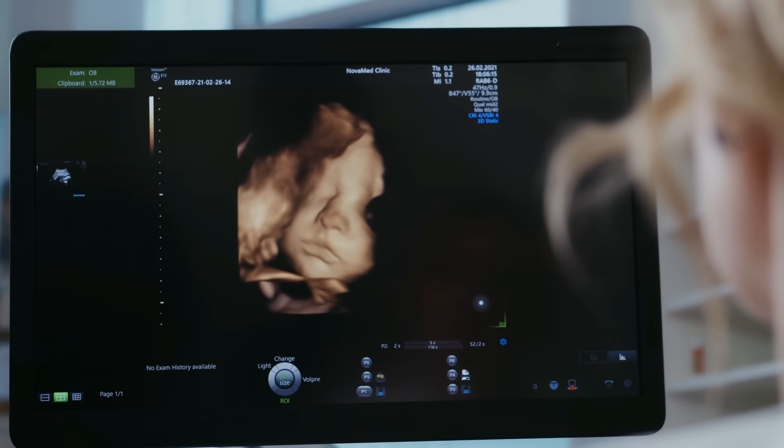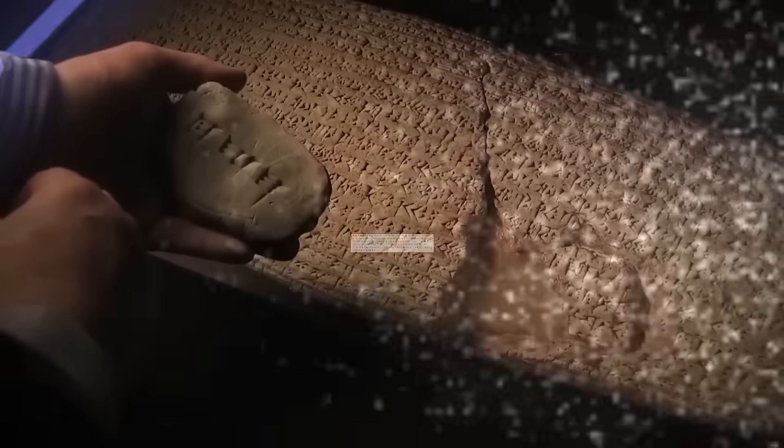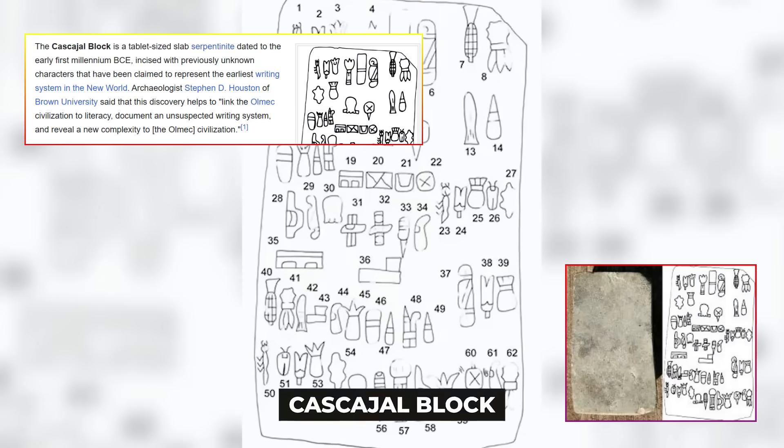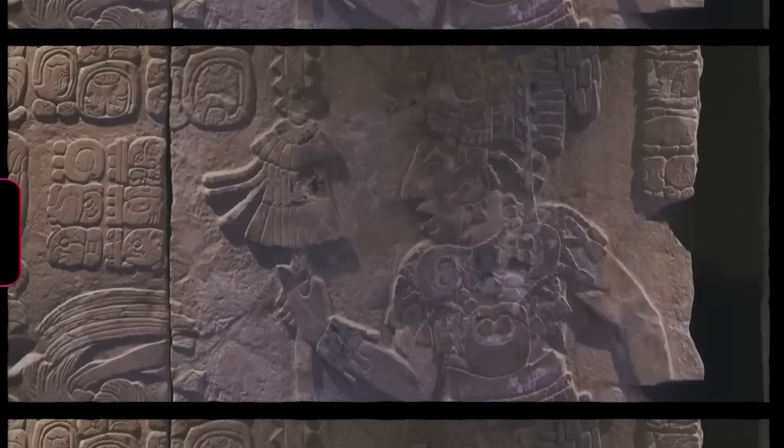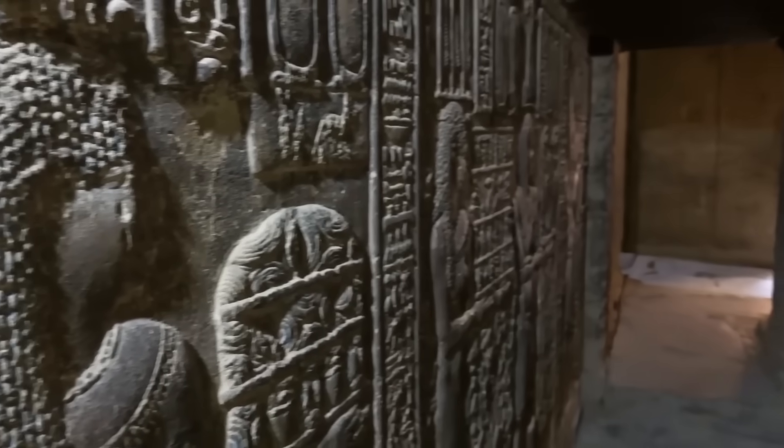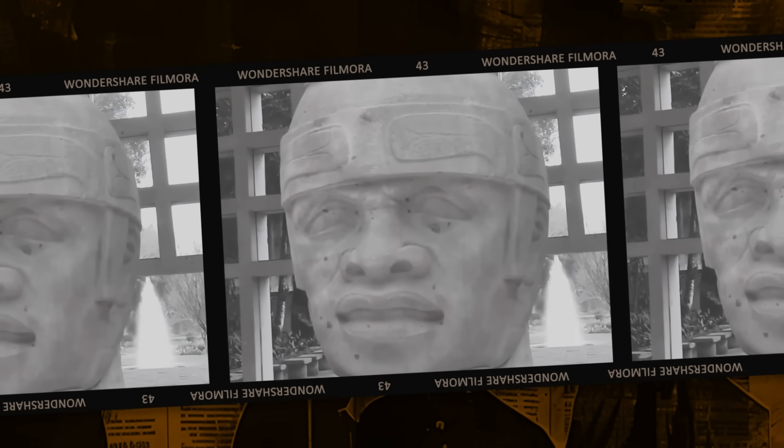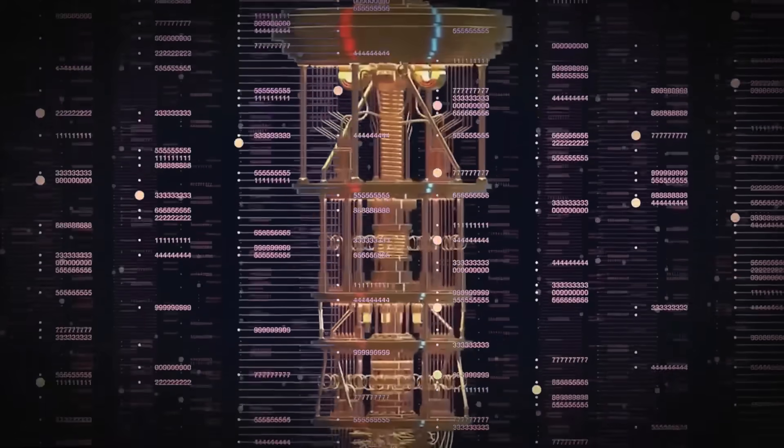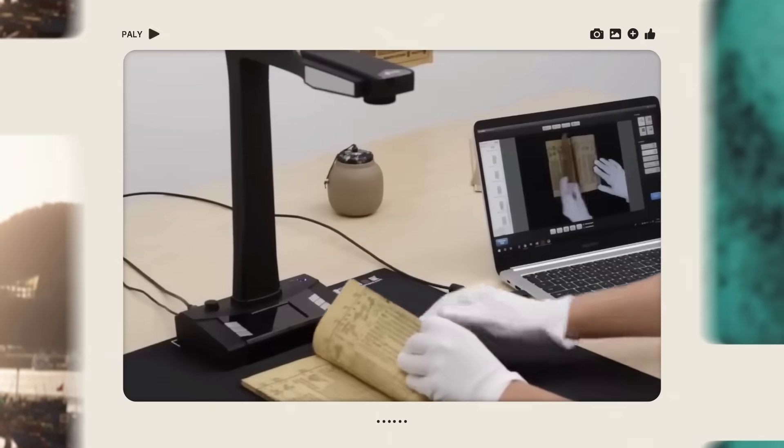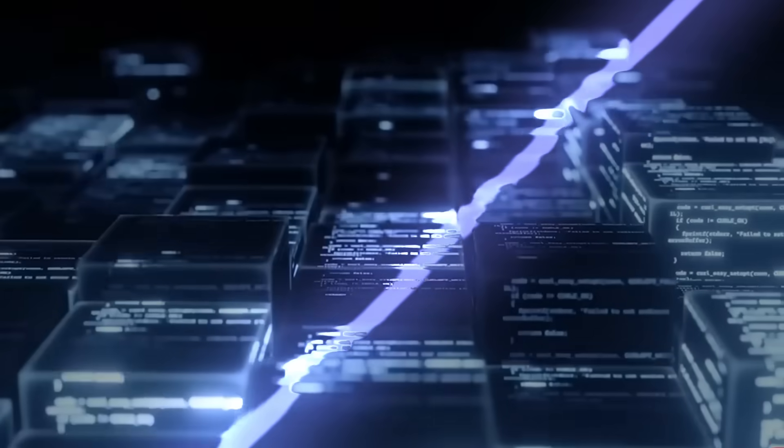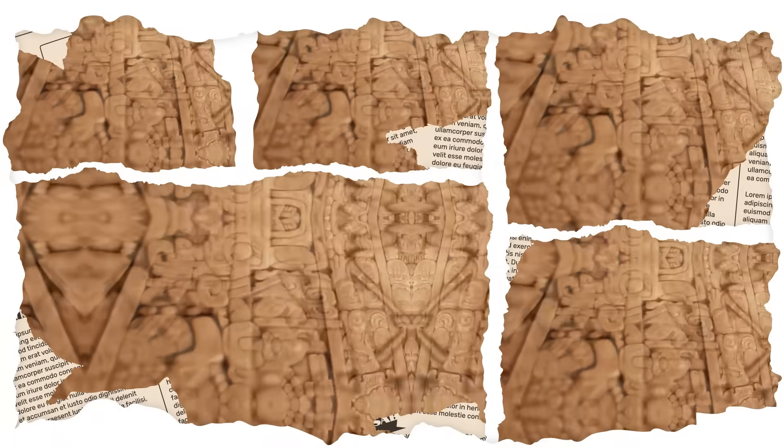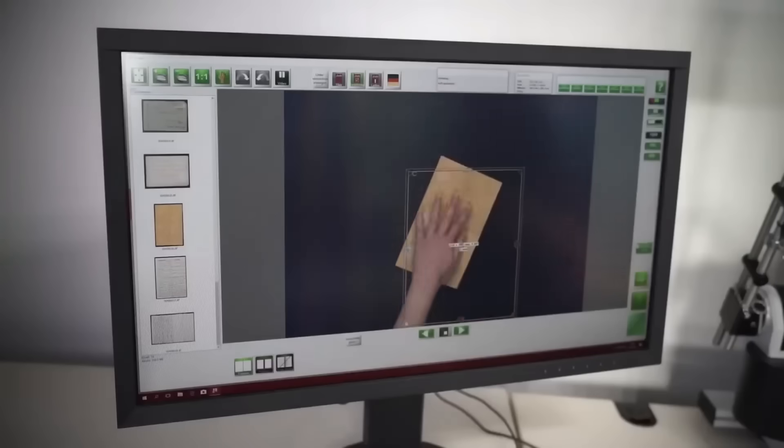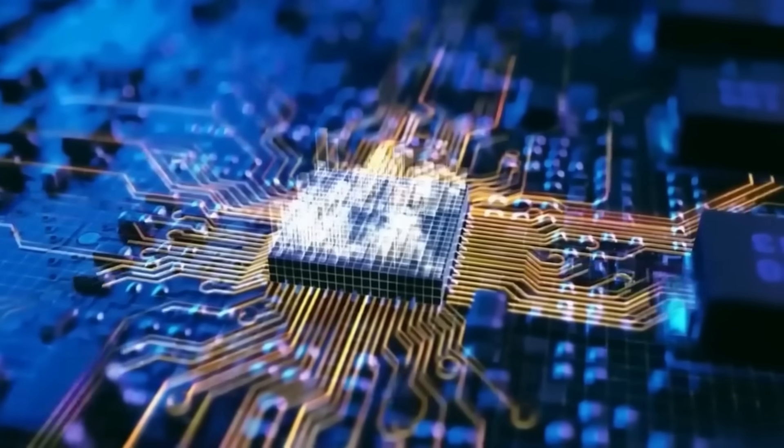The Olmecs ruled Mexico's Gulf Coast from 1200 to 400 BCE. Before the Maya built their pyramids. Before the Aztecs dreamed of Tenochtitlan. They carved colossal heads weighing 15 tons. Created sophisticated art. Built complex drainage systems. They were America's first great civilization. The Kaskajal block was discovered in 2006 by road workers in Veracruz. 62 mysterious symbols carved in horizontal rows on a serpentine slab. Unlike any other ancient American writing system. When archaeologist Stephen Houston first examined the block, he knew it was revolutionary.